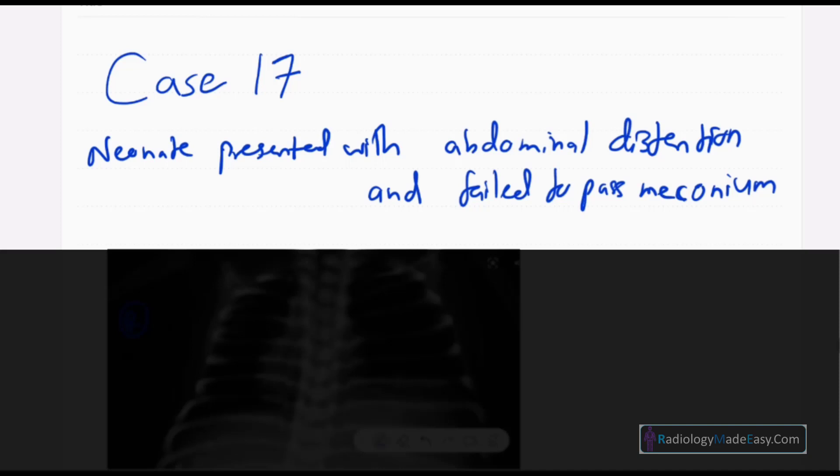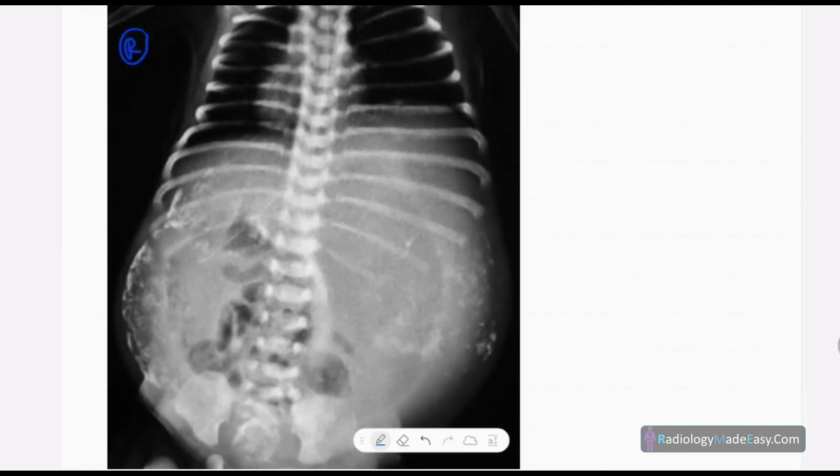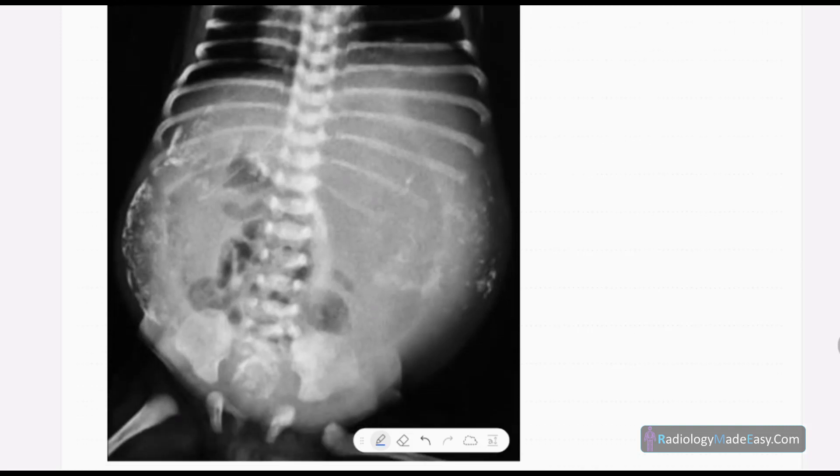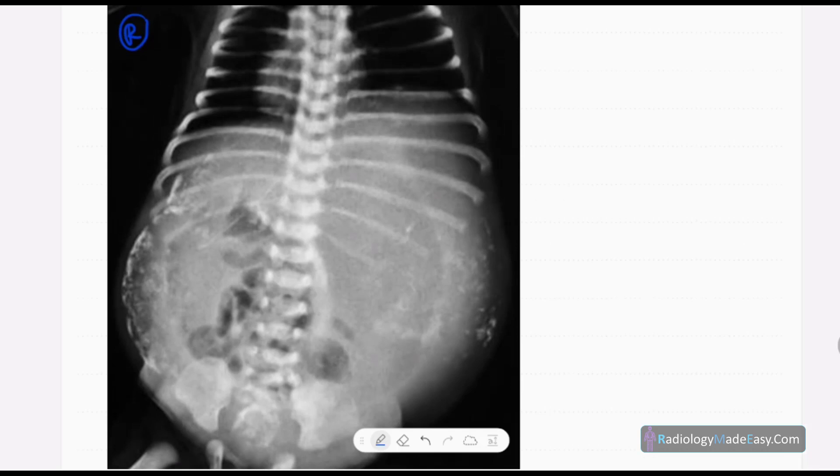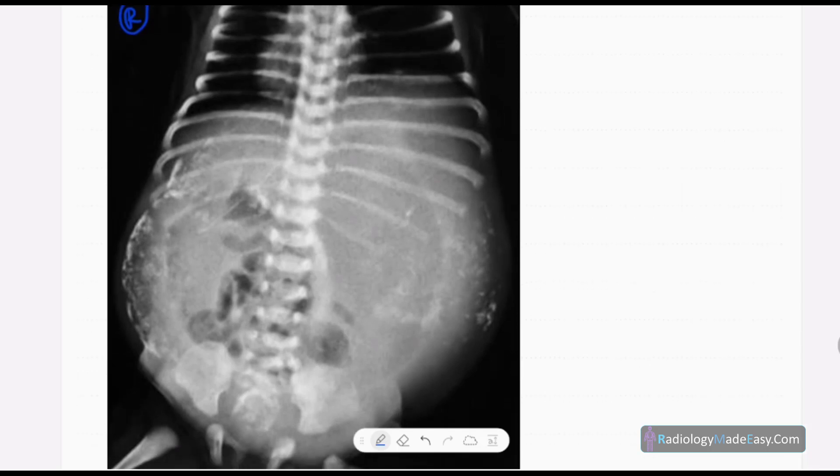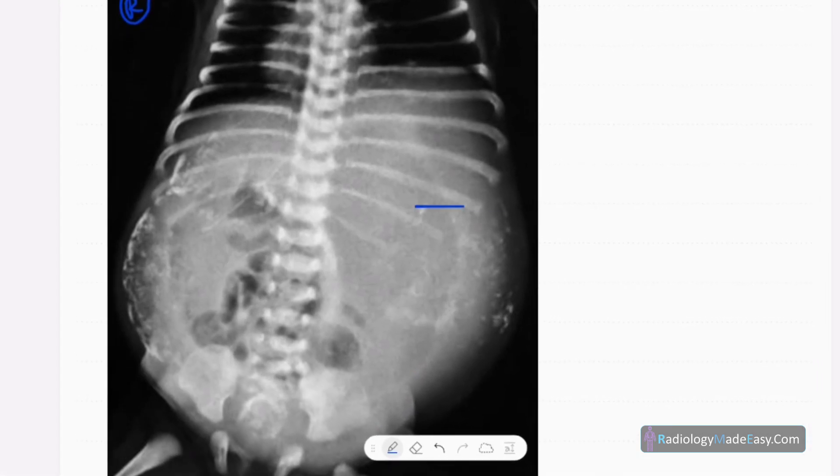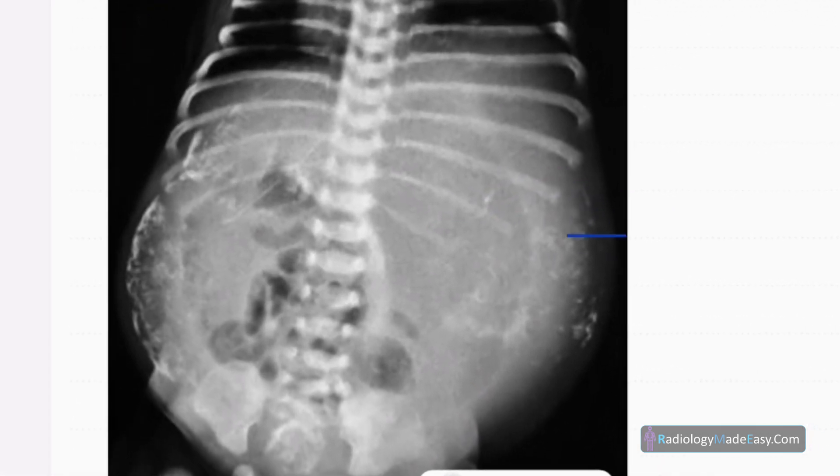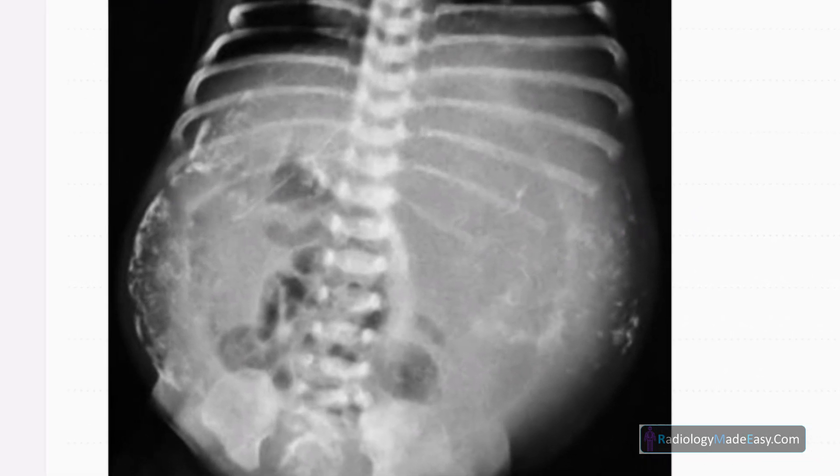This is the anterior posterior radiograph of the chest and abdomen of a neonate, probably a newborn. You can see a distended abdomen and there are few punctate-like high density opacities visible.